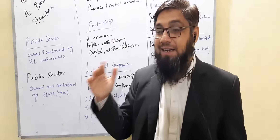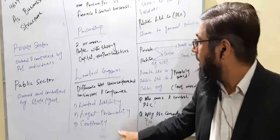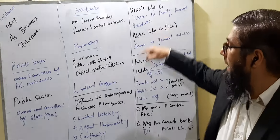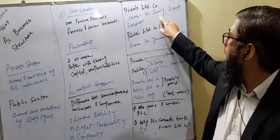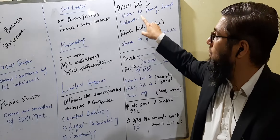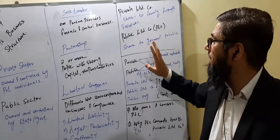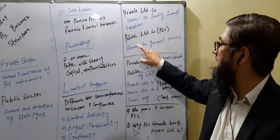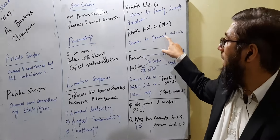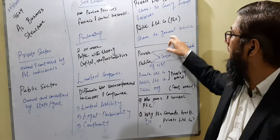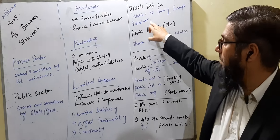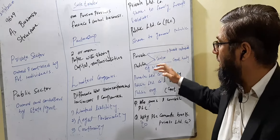When we talk about private limited companies, it means shares can only be sold to family, friends, or related parties. A public limited company means they can issue shares to the general public. So private limited is for family and friends, not the general public, while public limited is open to the general public.